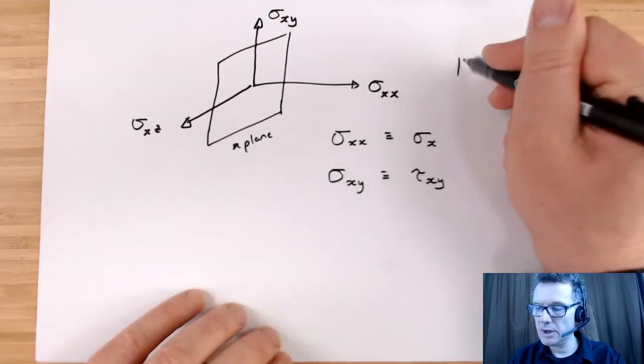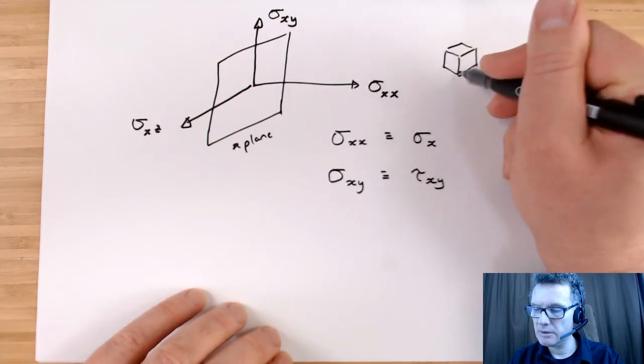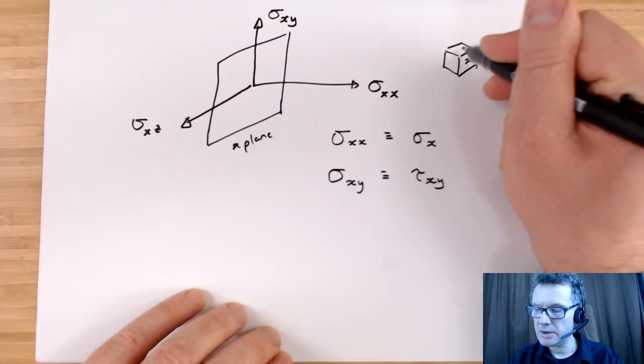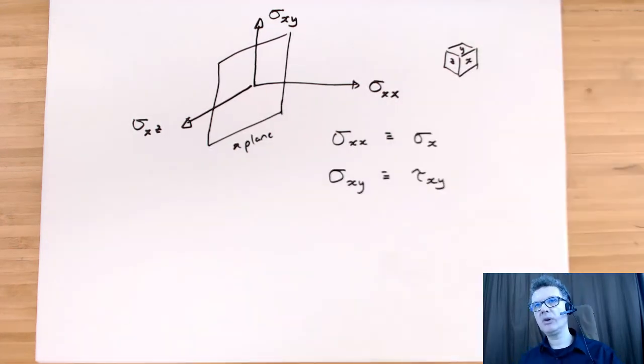So this is for my nearside plane. Now, imagine we're now going to do this for every plane face. So we've got the x, the y, and the z that's nearside. And then we've got the x, the y, and the z that's far side.